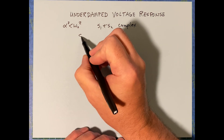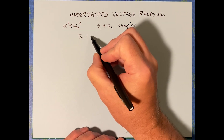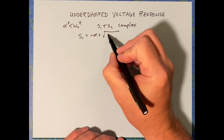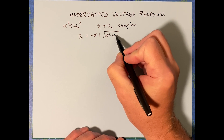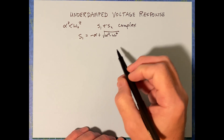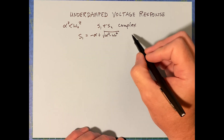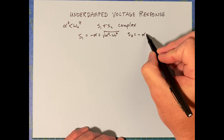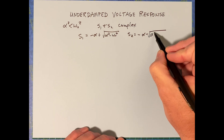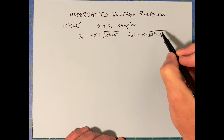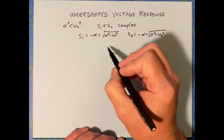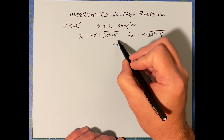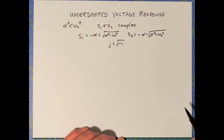In this case, S1 is going to equal minus alpha plus the square root of alpha squared minus omega naught squared — so what's underneath the radical is a complex number — and S2 is going to be minus alpha minus that square root. For this class, we're going to use J for the square root of negative one, not I. Hopefully the reasons for that are kind of obvious because I is already taken.